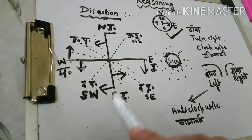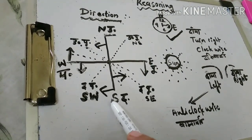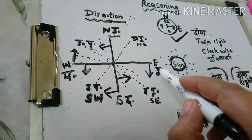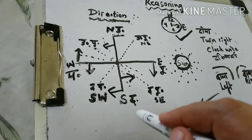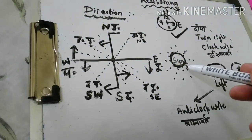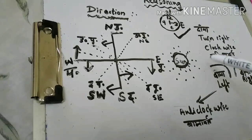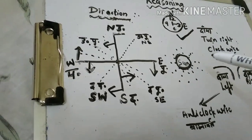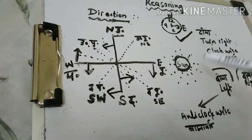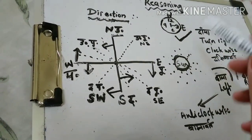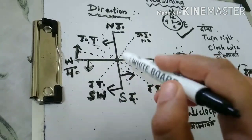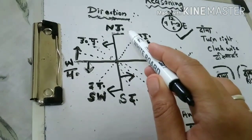The first problem that arises is: which direction is north, which is east, which is west, and which is south. The first thing to remember is that the Sun always rises from the east, so that direction is east. And 90 degrees to the left of east is north.